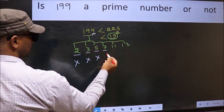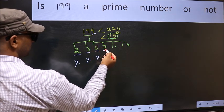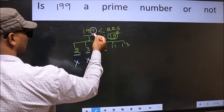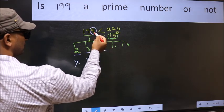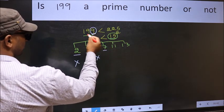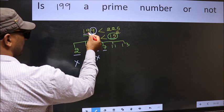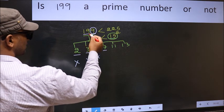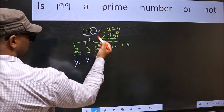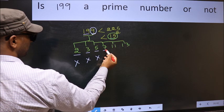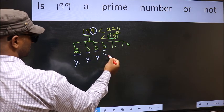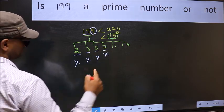Next, number 7: checking divisibility by 7. So 199 is also not divisible by 7.